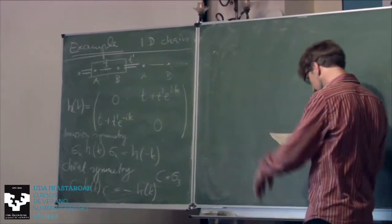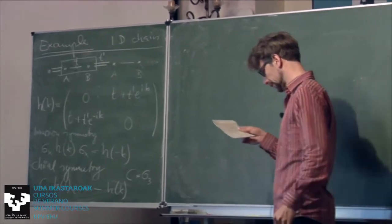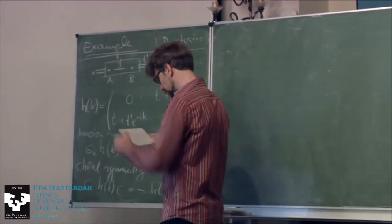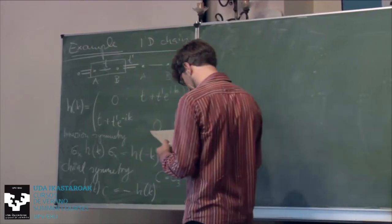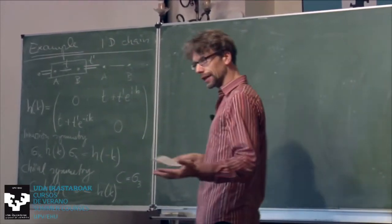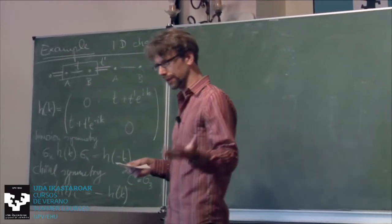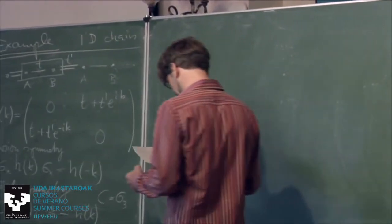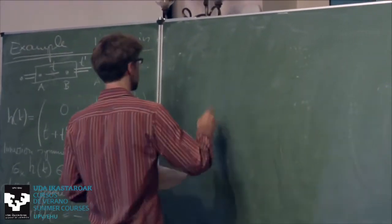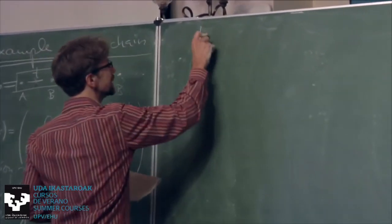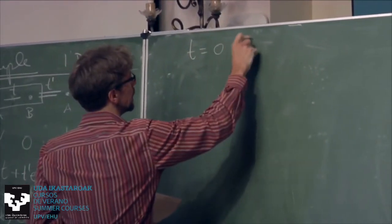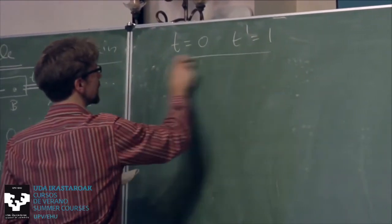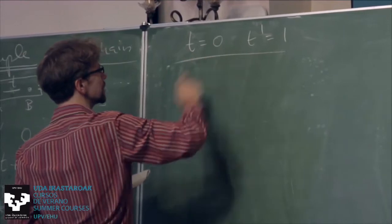So σ_3 serves as the chiral symmetry operator. That's just a statement for now; we'll use these symmetries in a moment. But before doing so, let's just calculate the Wilson loop in a simple case.